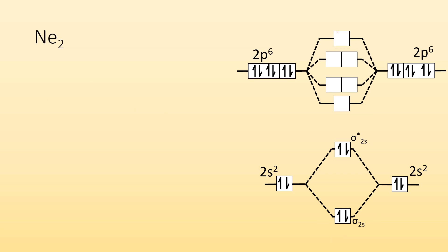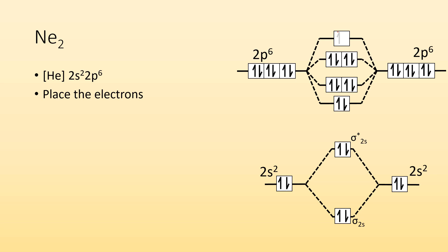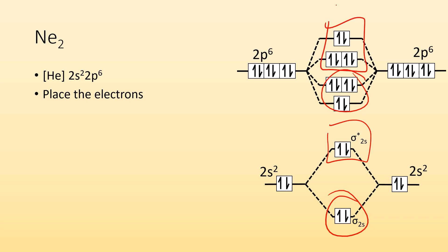Ne2, same process. Place all the electrons and fill the molecular orbitals. The bond order for neon would be 0: we have 8 bonding electrons and 8 anti-bonding electrons. Neon is a noble gas — it doesn't like forming molecules and doesn't bond to other things.